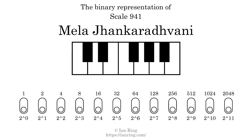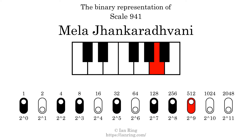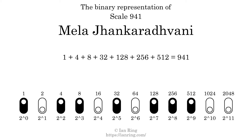The binary representation of this scale is determined by mapping tones of the scale to binary digits. Each binary digit represents a power of 2. To get the scale number, we add the powers of 2 together. The powers of 2 that are present in the scale, all added together, equals 941. That is why the scale number, in decimal, is 941.